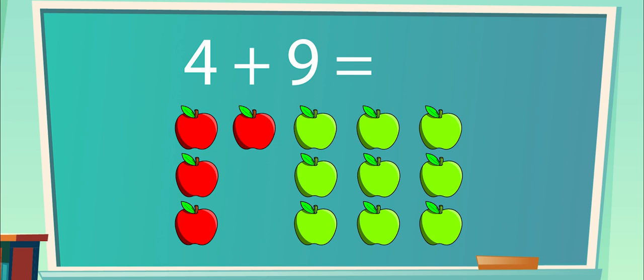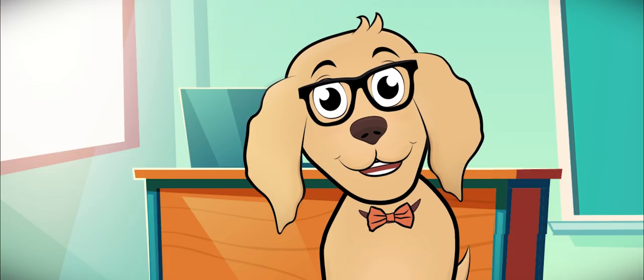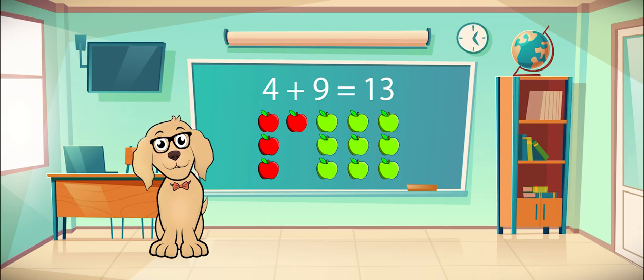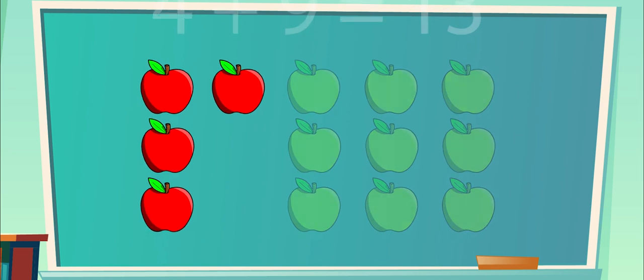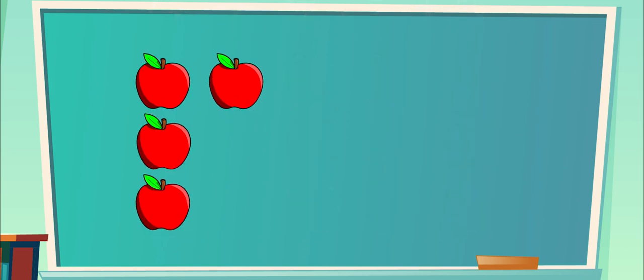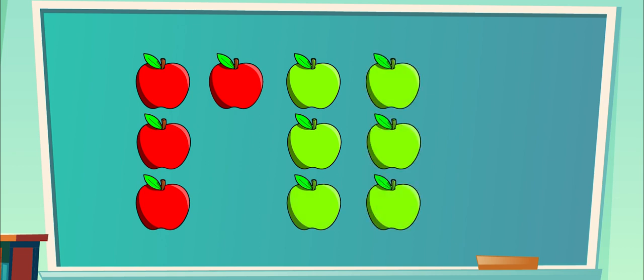Did you get a sum of thirteen apples? You're a rock star! Let's break it down. Starting with four apples and adding nine more, you can count up from four nine times. Five, six, seven, eight, nine, ten, eleven, twelve, thirteen. Thirteen apples!